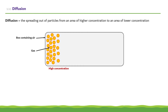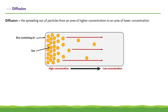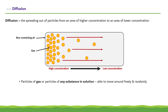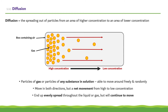Diffusion is a spreading out of particles from an area of higher concentration to an area of lower concentration. Diffusion occurs with particles of gas or particles of any substance in solution, as they are able to move around freely and randomly. Whilst the particles move in both directions, there is a net movement from high to low concentration. The particles will end up evenly spread out throughout the liquid or gas, but will continue to move.